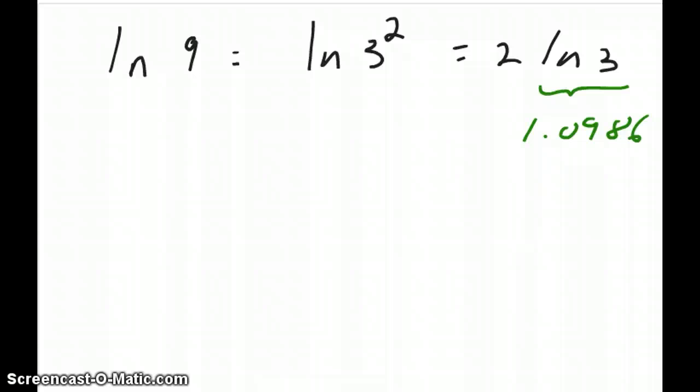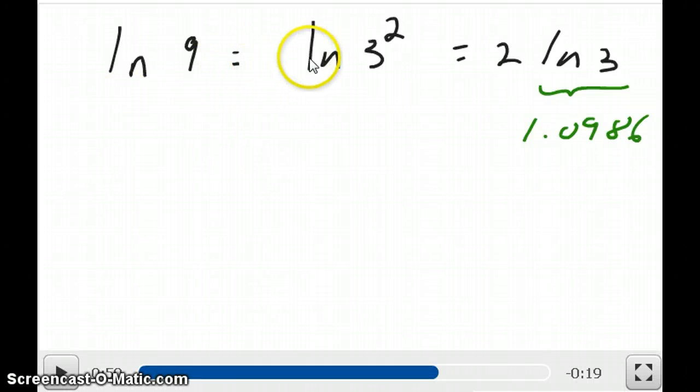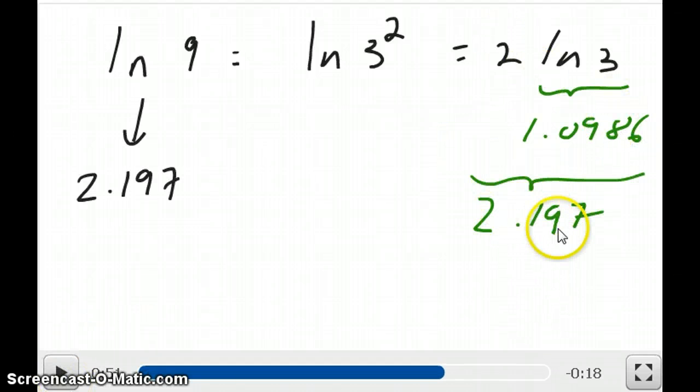You can do the same thing with ln. ln of 9, we did the calculation earlier, but this can be written as ln of 3 squared, which is 2 times ln 3. ln 3 is 1.0986, so 2 times ln 3 would be equal to 2.197. And when you do ln 9 calculation directly in your calculator, you also get 2.197.